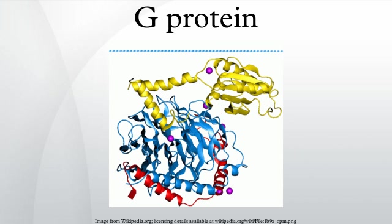Whereas G-proteins are activated by G-protein coupled receptors, they are inactivated by RGS proteins. Receptors stimulate GTP binding; RGS proteins stimulate GTP hydrolysis. G-protein can refer to two distinct families of proteins. Heterotrimeric G-proteins, sometimes referred to as the large G-proteins, are activated by G-protein coupled receptors and are made up of alpha, beta, and gamma subunits. Small G-proteins belong to the RAS superfamily of small GTPases. These proteins are homologous to the alpha subunit found in heterotrimers, but are in fact monomeric, consisting of only a single unit. However, like their larger relatives, they also bind GTP and GDP and are involved in signal transduction.